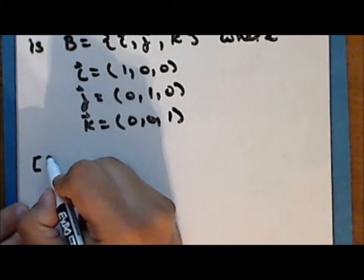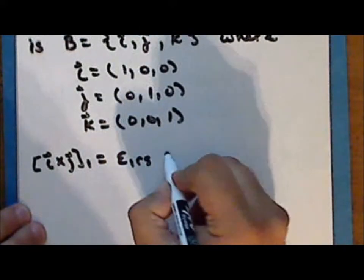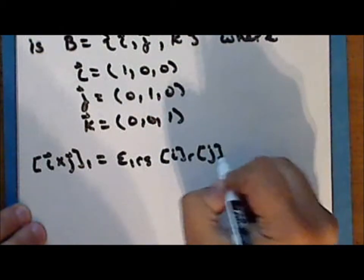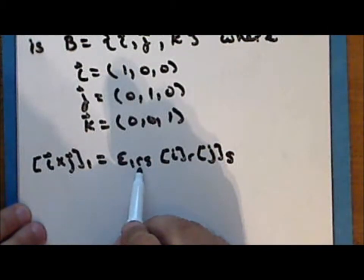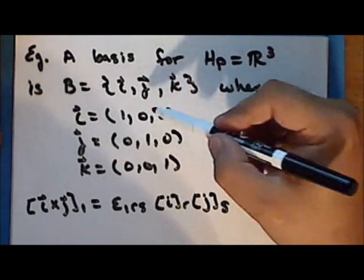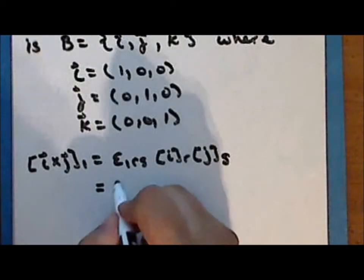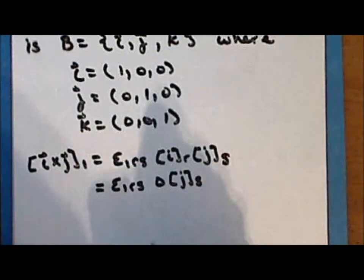We'll compute the cross product i cross j component-wise. The first component of i cross j is ε₁ᵣₛ times the R-component of vector i times the S-component of vector j. In this permutation, the indices R and S range from 2 and 3. Both the second and third components of vector i are 0, so this equals ε₁ᵣₛ times 0 times the S-component of j, which is 0.